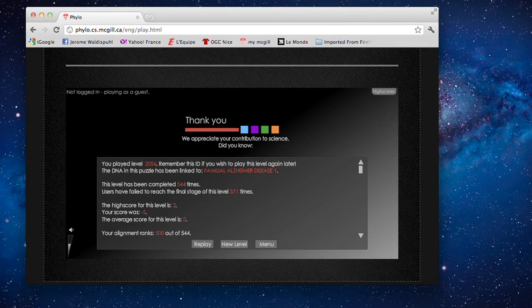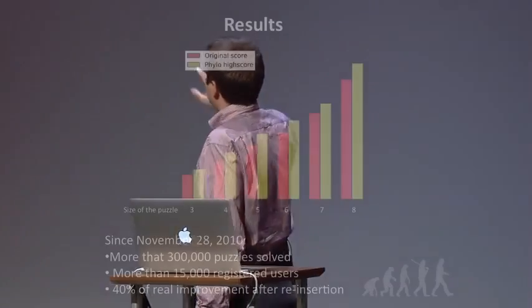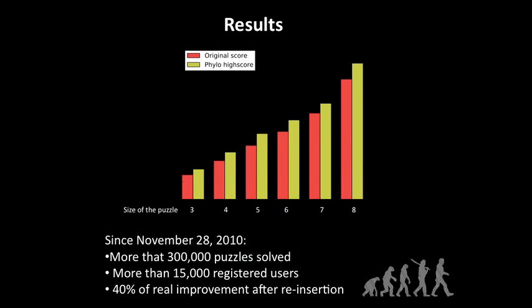You receive information about where you contributed — the disease associated with your puzzle, the number of times it's been played, and the best score. We launched this project in November 2010 and have approximately half a million puzzle attempts, with 300,000 completed and 15,000 people registered. We just finished analyzing the solutions: we reinserted them into the genome at their original location and found that 40% of the alignments provided a real improvement over current methods. This method works — we're able to do better than the best algorithms currently used.